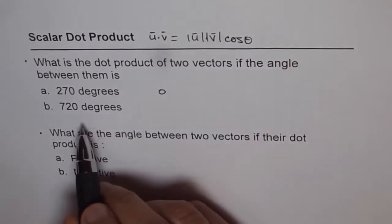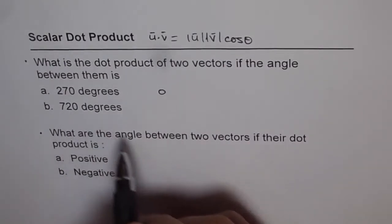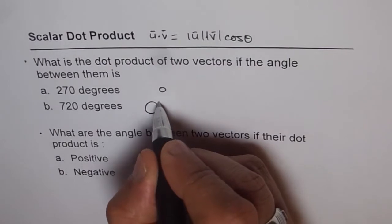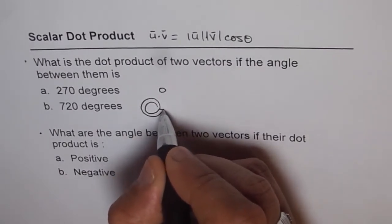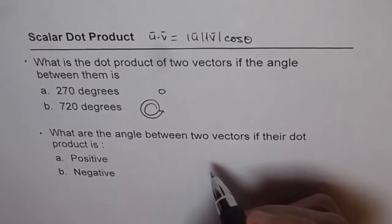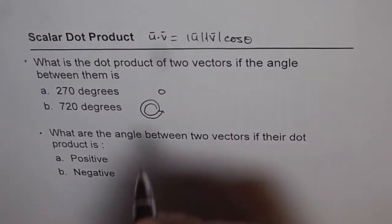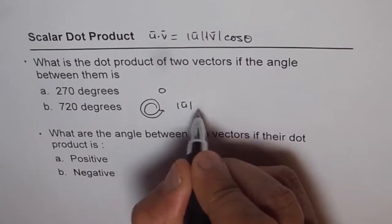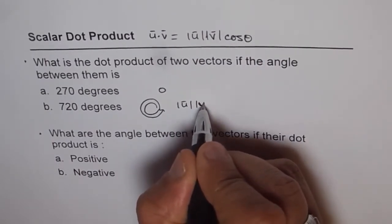In the second case, when it is 720 degrees, 720 degrees is like one circle, 360 and then the next circle. It is as good as 0. And cos of 0 is 1. So it would be the product of their magnitudes. You can write this as the product of their magnitudes.